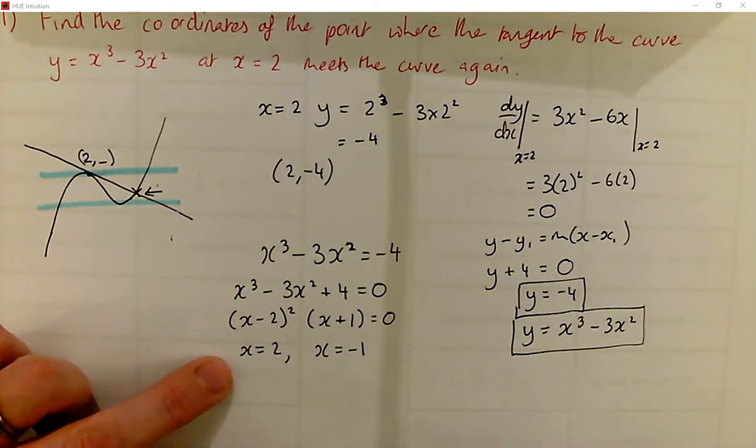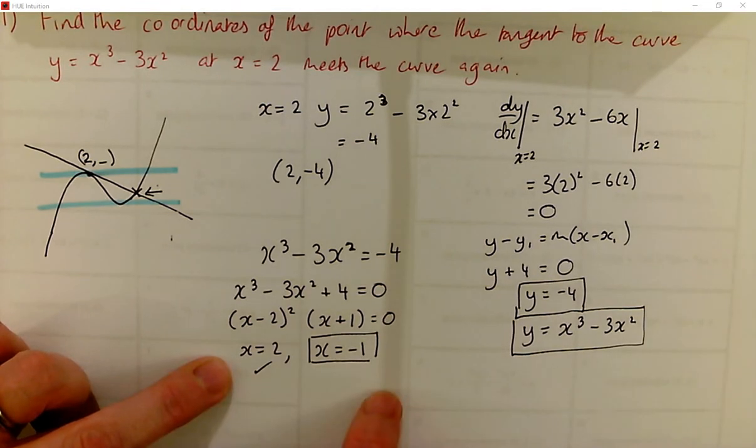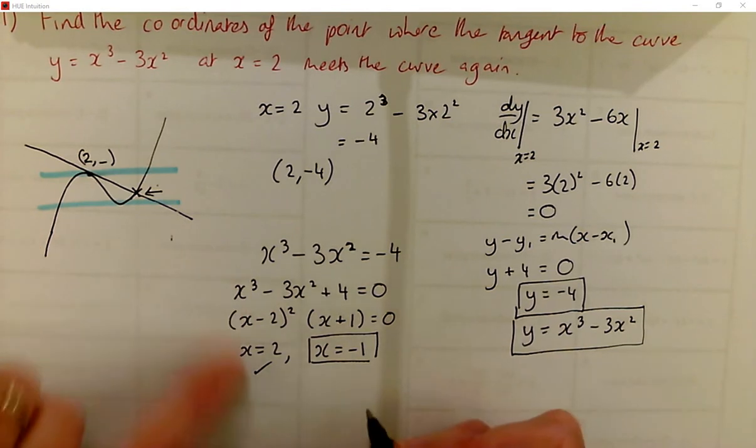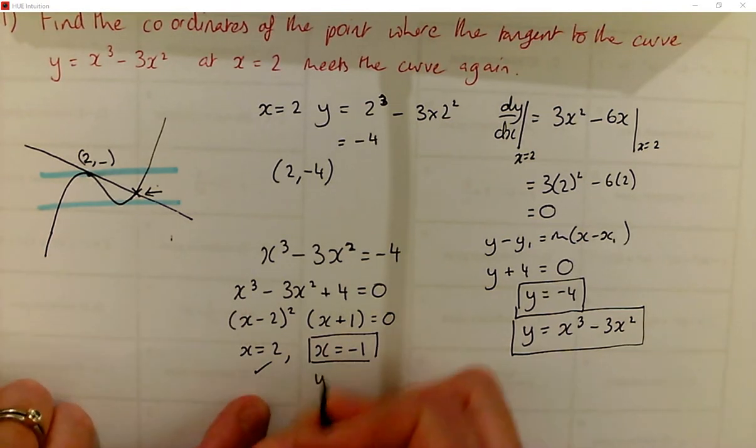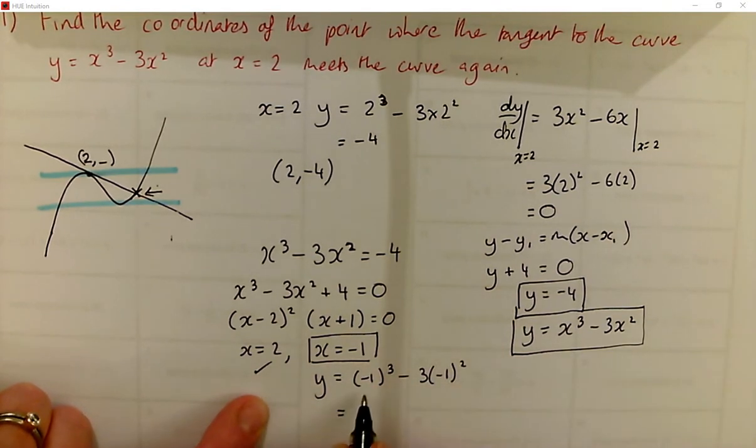So we already have used that one up. So the coordinates of the point where it meets the curve again must be where x is negative 1. So in this case, we're going to substitute that back in to get y. So that will give us negative 1, take away 3, so negative 4. So that means our point is negative 1, negative 4.